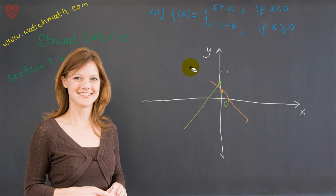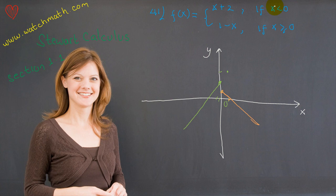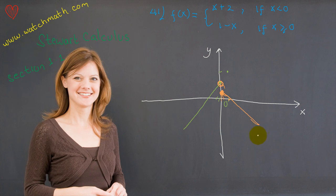Let us redraw, drawing only the part for x greater than or equal to 0. Be careful: this piece, x plus 2, applies for x strictly less than 0, so x equals 0 itself is not included there — it is an open point. But for 1 minus x, x equals 0 is included, so that endpoint is a filled point. That is the complete graph of f(x).